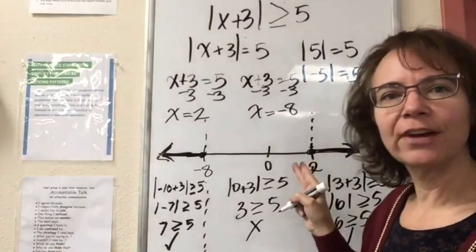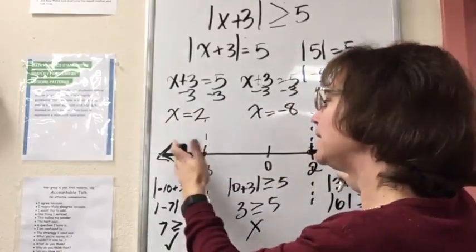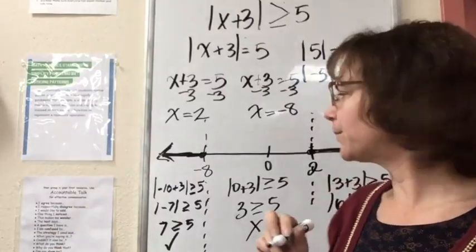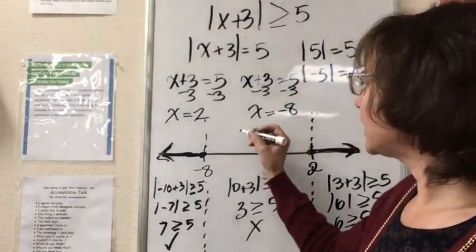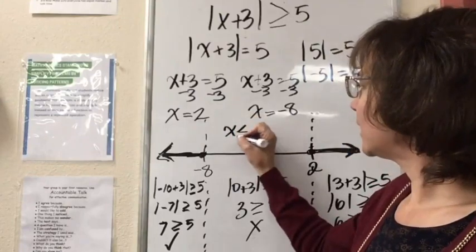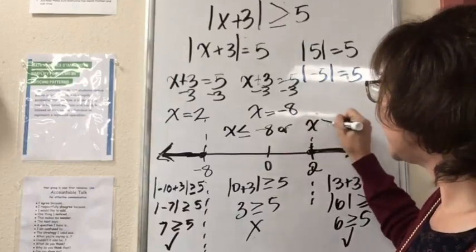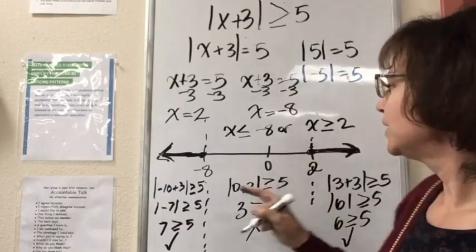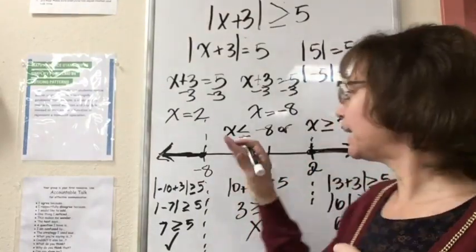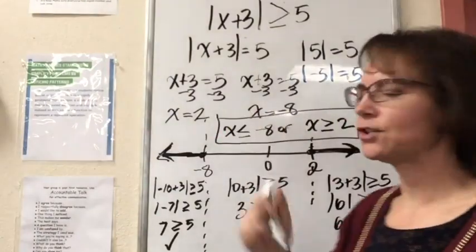When x is greater than 2 and when it's to the left of negative 8, these are happening at different places — not at the same time. So this is when we use OR for our algebraic solution. We can say x is less than or equal to negative 8 OR x is greater than or equal to 2. It's either this side or that side. This is the algebraic solution.